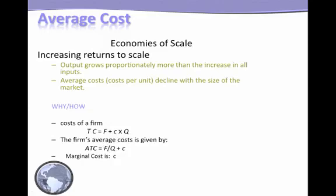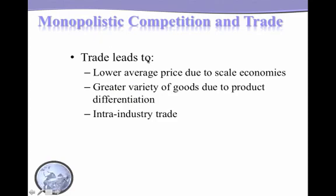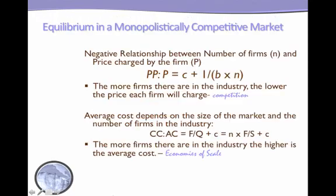Think about the automobile industry — the plant size is huge. So what happens if the number of firms n increases? Each firm has a smaller share of the market, the firm produces a smaller quantity, the scale of production decreases, and hence average cost increases. In monopolistic competition which leads to trade, consumers benefit from a lower average price due to scale economies, there is greater variety of goods, and you have intra-industry trade.